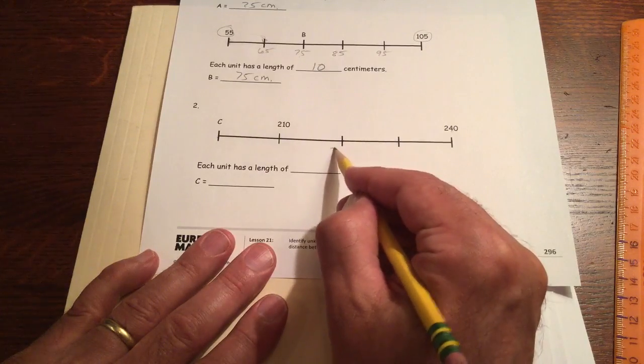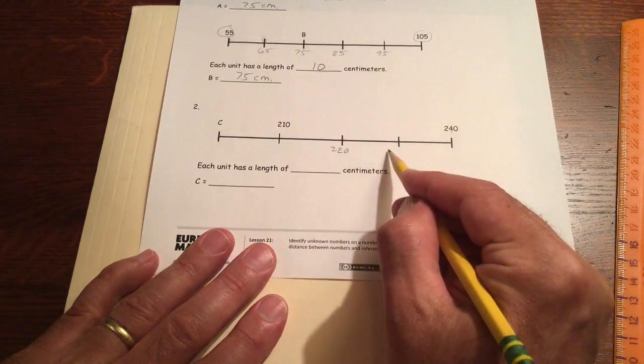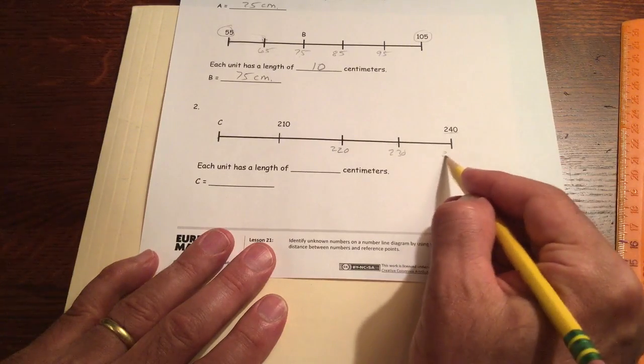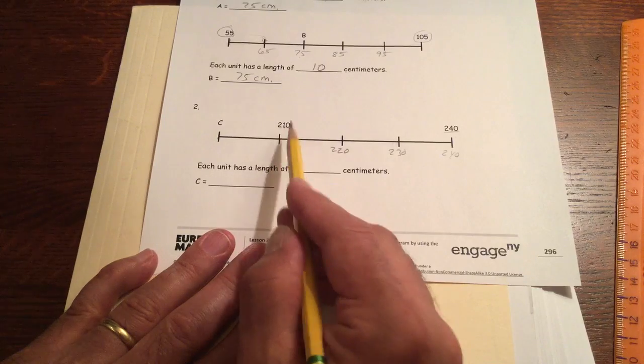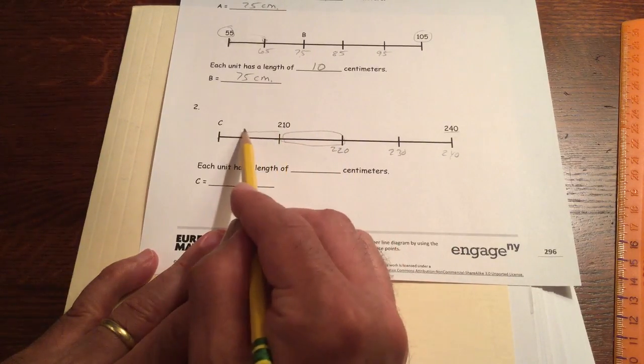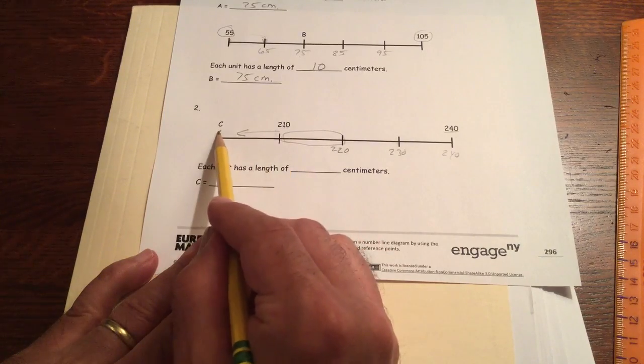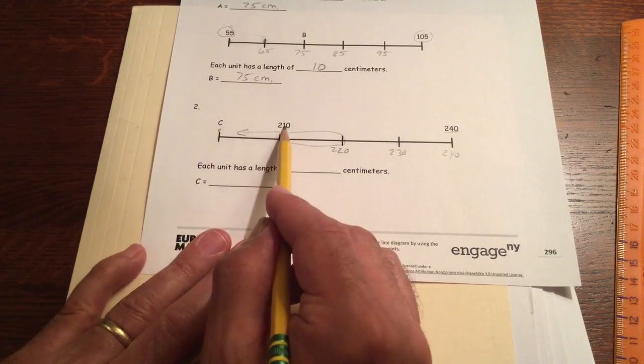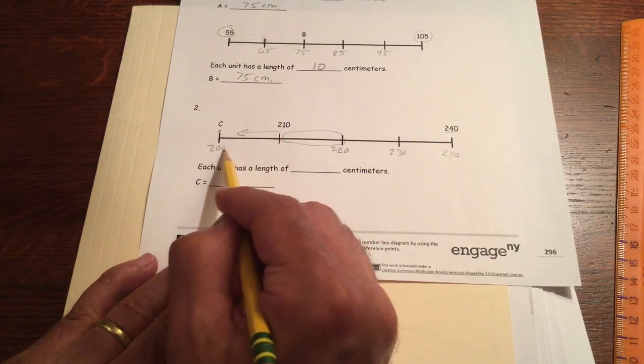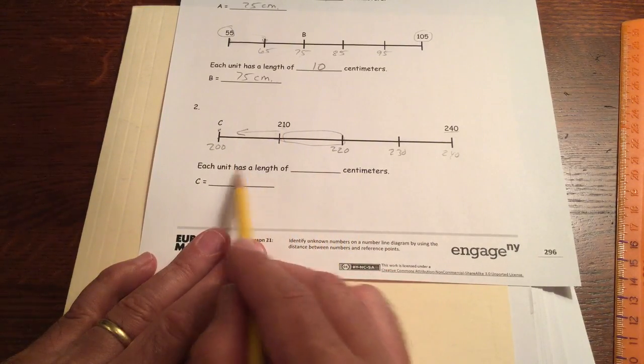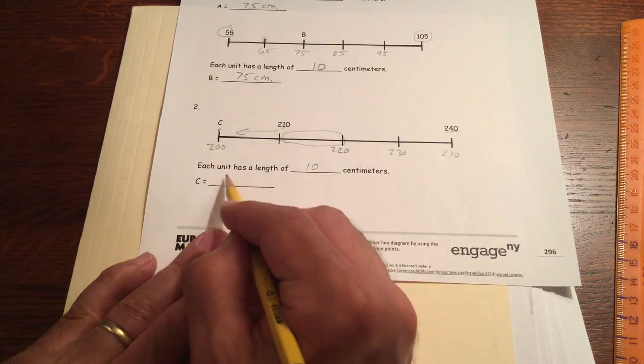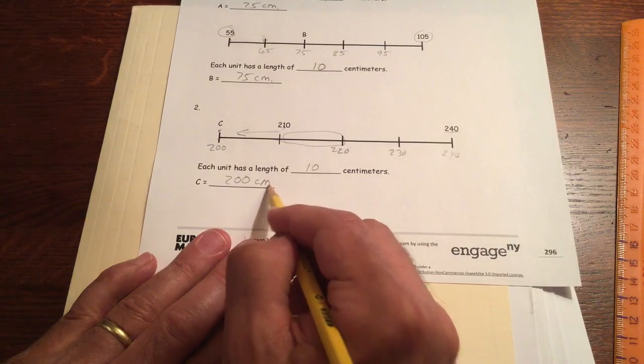So if that's 210, this has to be 220, and this would be 230, and then it works because then that gets us to 240. So if this is 210, if these are 10 apart, then we have to go back 10. That means this is going to be 10 less, and 10 less, and 10 less than 210 is going to be 200. So each unit has a length of 10 centimeters, and C is 200 centimeters.